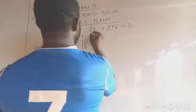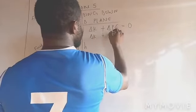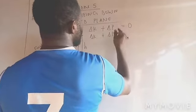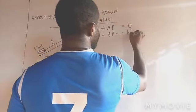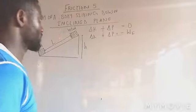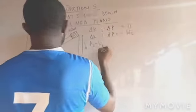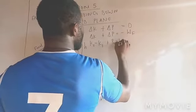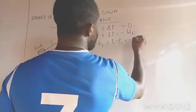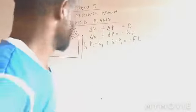In the presence of friction we have ΔK plus ΔP is equal to negative work done by frictional force. Change in K means K2 minus K1 plus P2 minus P1 which is equal to minus FL.